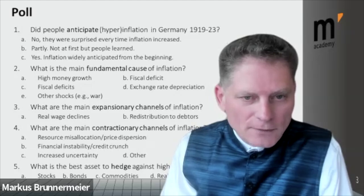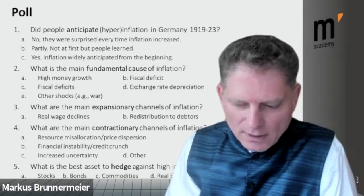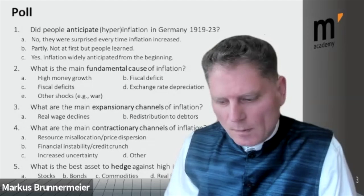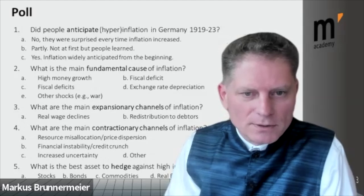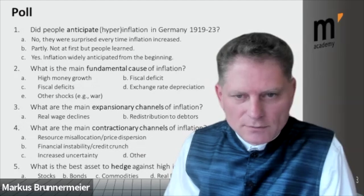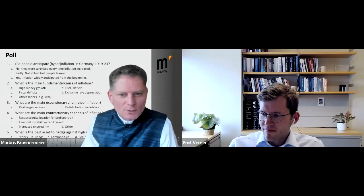Given high inflation today, the fifth poll asked: what's a good hedge against high inflation or even hyperinflation — stocks, bonds, commodities, real estate, or other? Answers: 12 percent stocks, zero percent bonds since nominal bonds offer no protection, 33 percent commodities, and 55 percent real estate. Most people thought real estate is the best hedge. Emil will tell us what really happened historically.